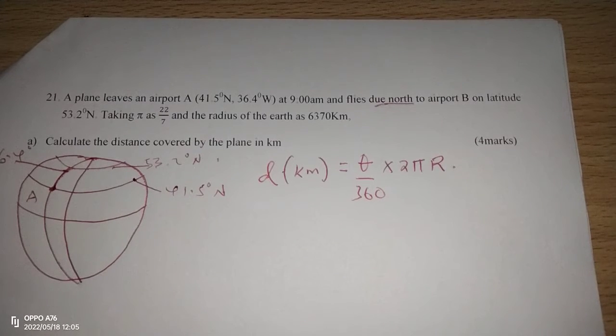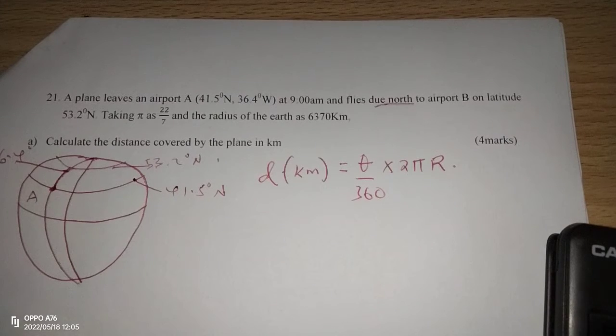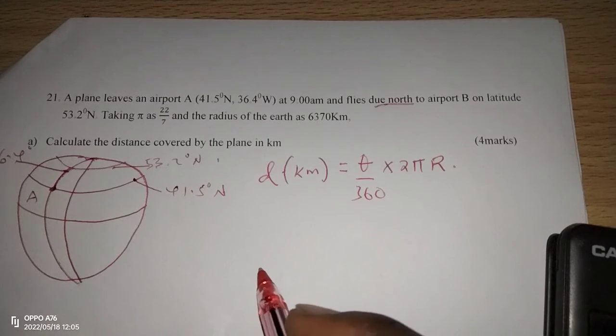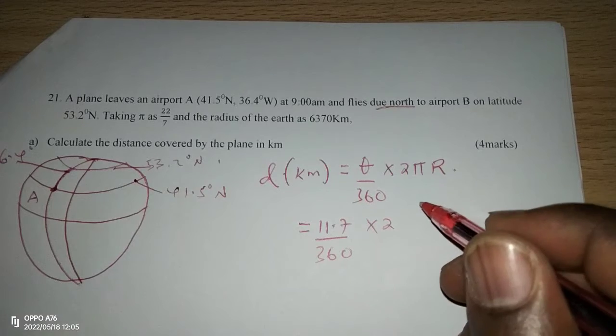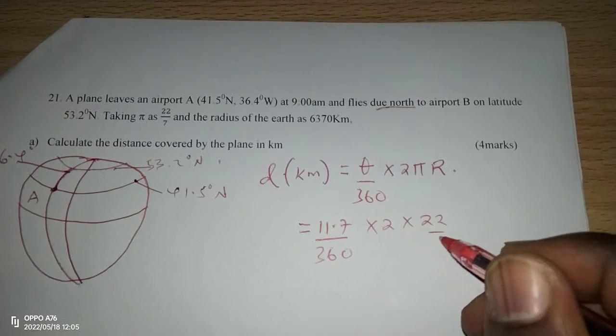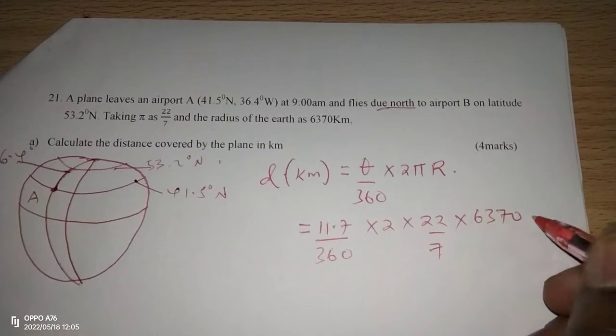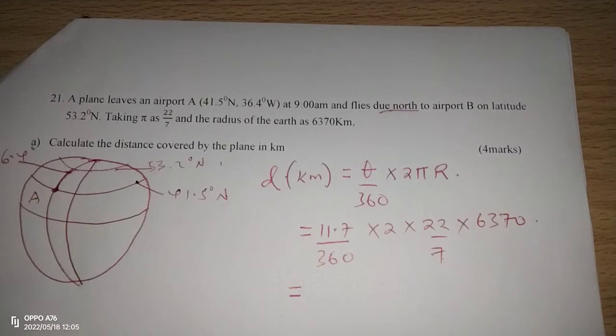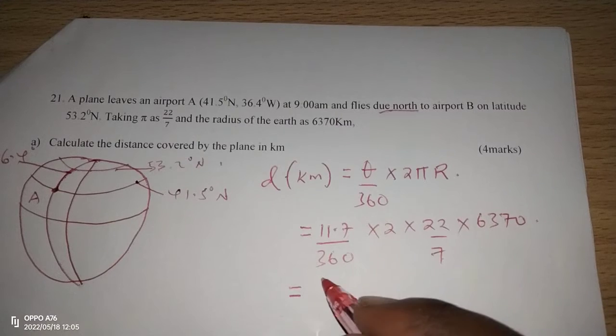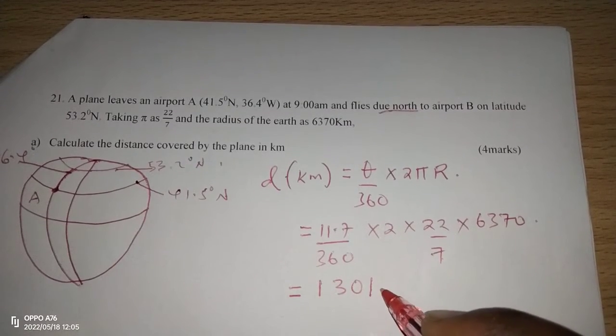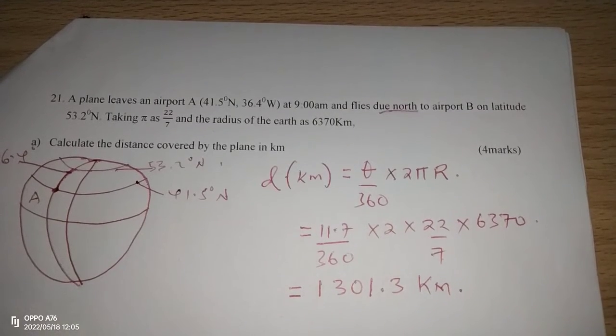So when we subtract 53.2 and 41.5, we realize that we have covered an angle difference of 11.7. Therefore, we use 11.7 out of 360 times 2 multiplied by 22 out of 7 multiplied by 6370, the radius of the earth. In kilometers, we shall get this gives us 1301.3 kilometers.